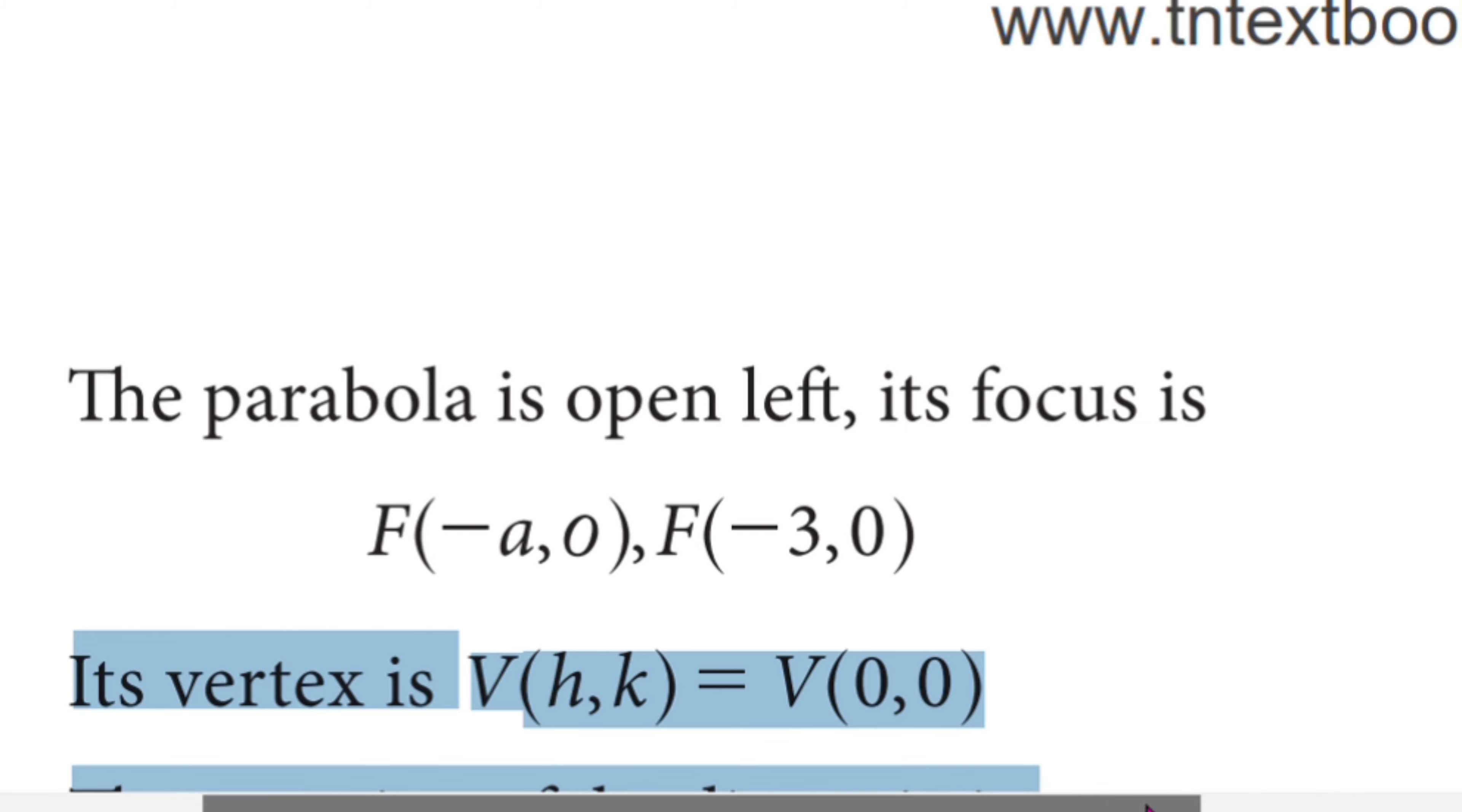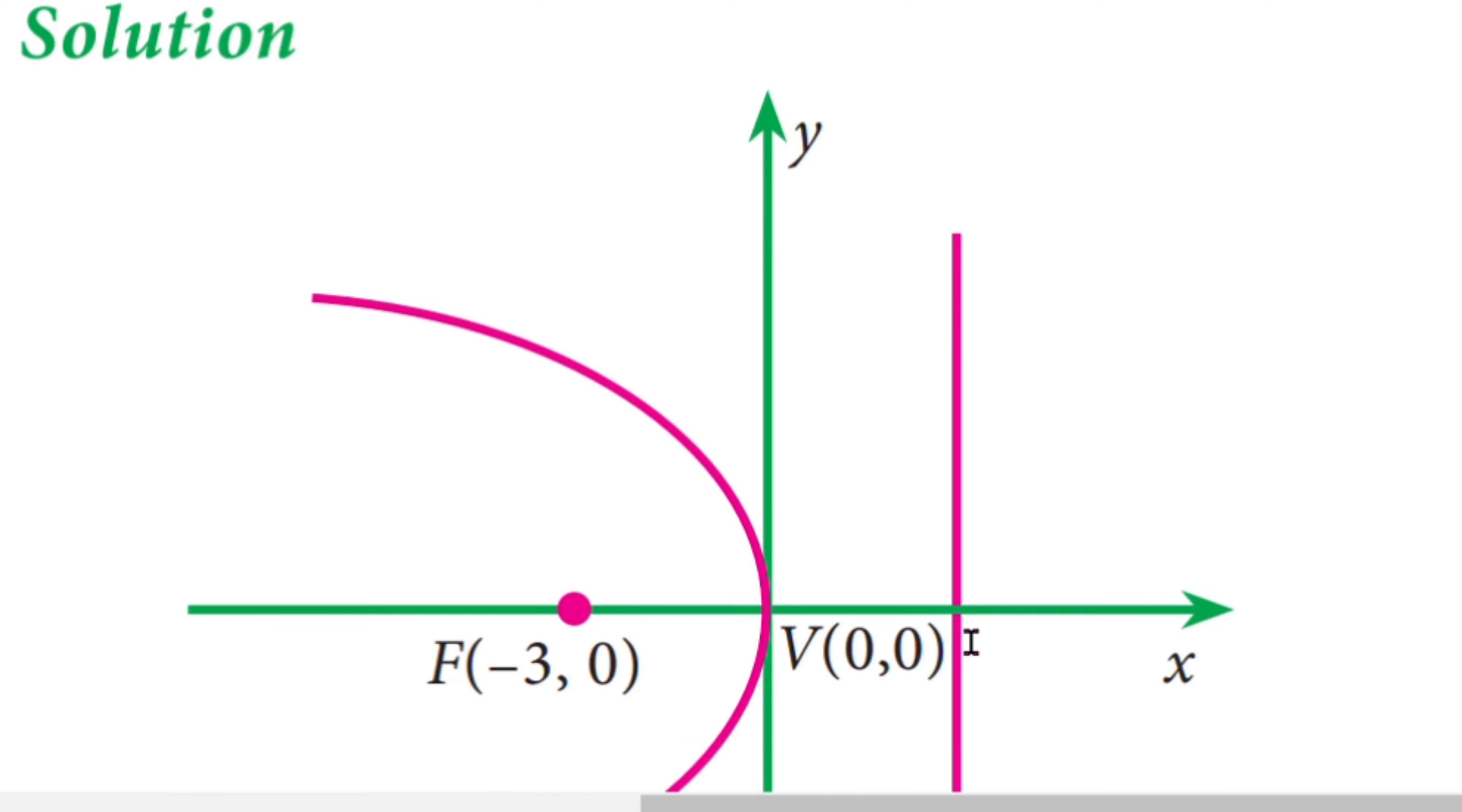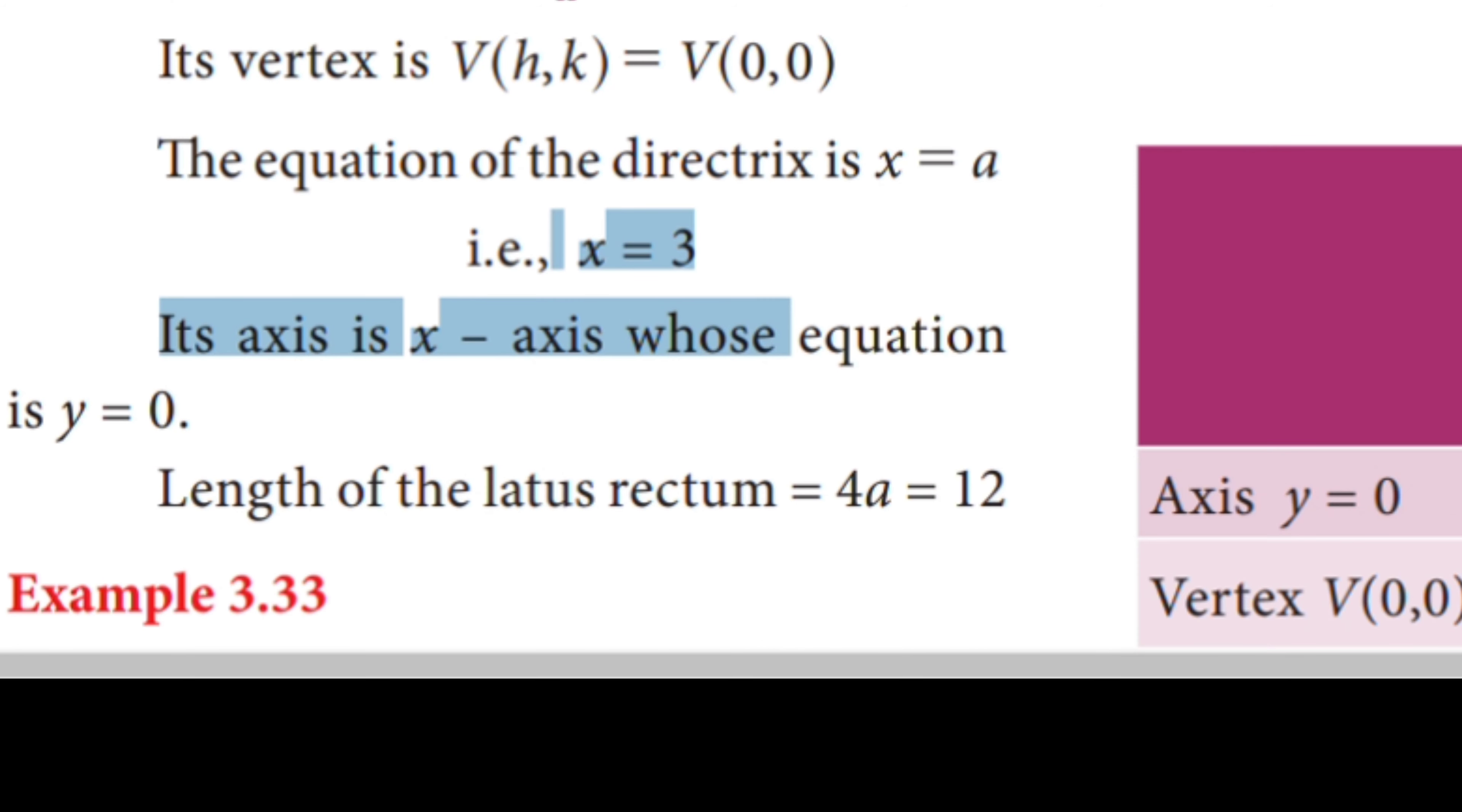The vertex is shown in the diagram. The equation of the directrix is x = a. Since a = 3, the directrix is x = 3, which is on the right side.